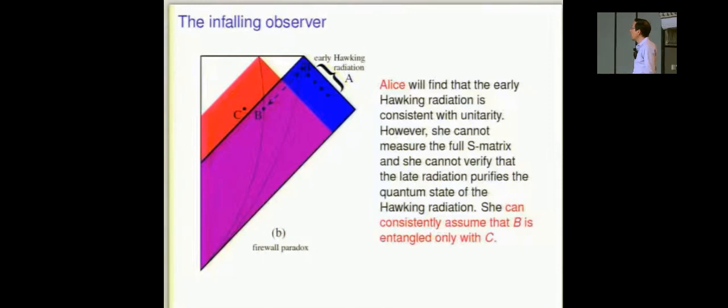Let's see how that works out. So the infalling observer, Alice, she will find indeed that the early Hawking radiation is consistent with unitarity. Those 90% everything is exactly as Bob's S matrix predicted. But notice, and this is a very central point, notice that Alice does not even in principle have access to the full S matrix. If Alice is going to be what we say she is, an infalling observer after 90% of the Hawking radiation, Alice is not going to see the remaining 10%.